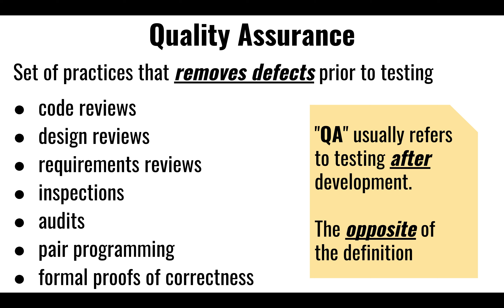Typically this is understood in reverse — in the opposite meaning. QA typically means the product has been released for testing, and then it's the task of finding and identifying defects because we want to remove them. But really, quality assurance is about what we can do to maintain the quality of our source code so those defects don't go out there.